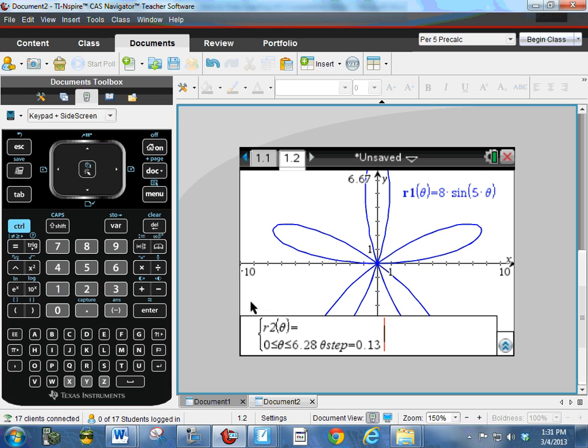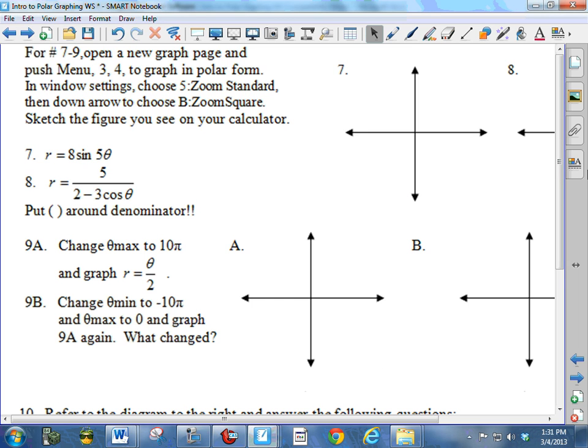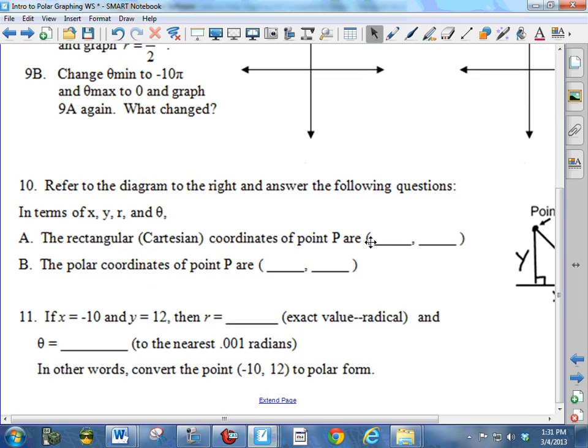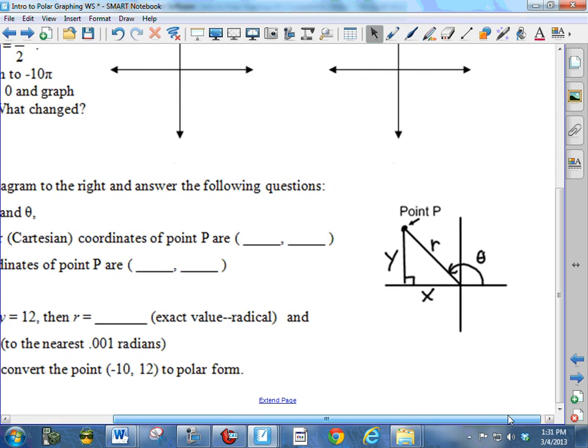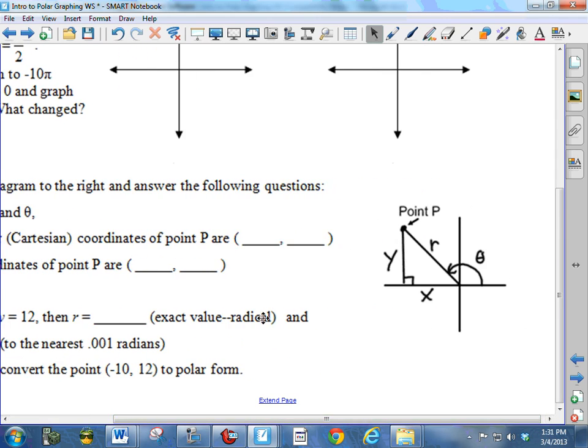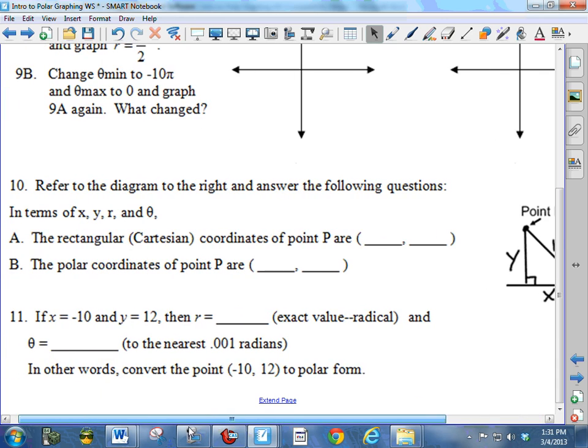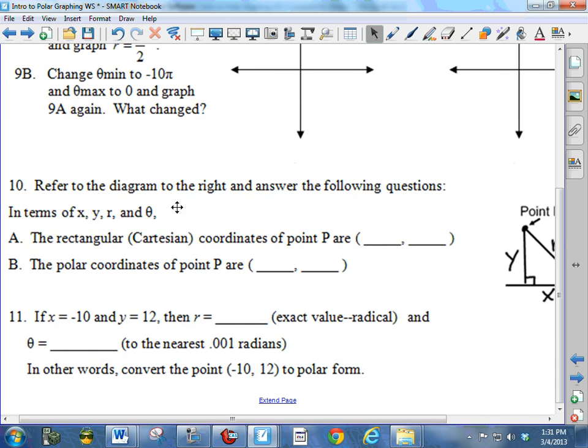So hopefully that'll help. Actually, I wanted to talk about one more thing, number 10. Let's just talk about number 10, what I'm looking for. These blanks should either have x, y, r, theta in them. So you're referring to this little drawing over here. And so I don't want specific numbers here. I just want x, y, r, and theta in these blanks. So whichever, wherever you think that's appropriate to put the x, y, and the r, theta.